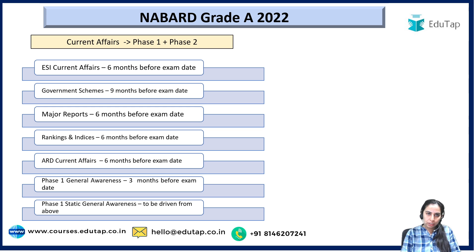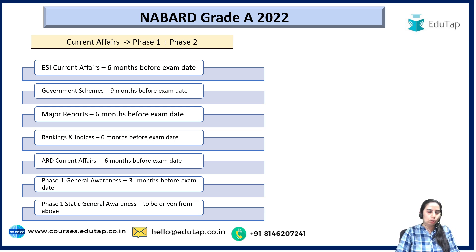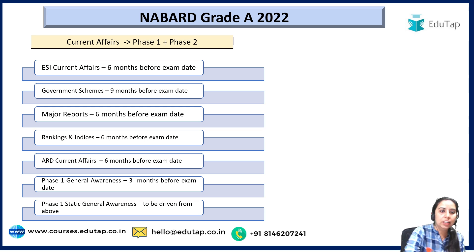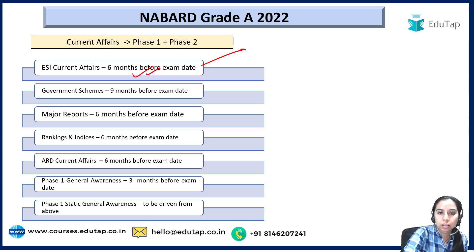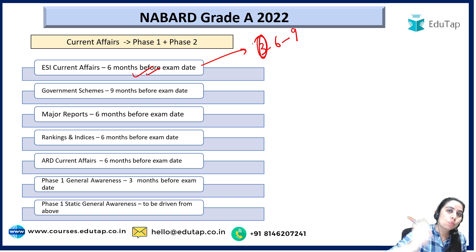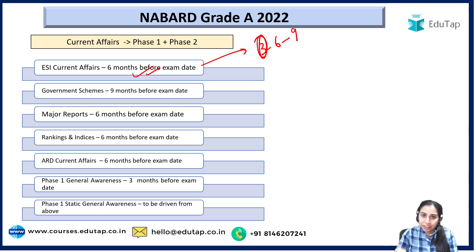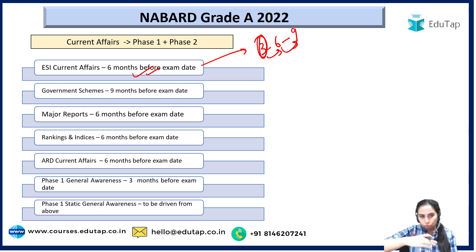Current affairs is a bit of a long story. When you cover ESI current affairs, ensure that you cover 6 months before the examination. The idea is the 369 rule — 3 months before the examination are the most important, so go for them first, then the next 3 months, then the next 3 months. This is the way you have to approach ESI current affairs.